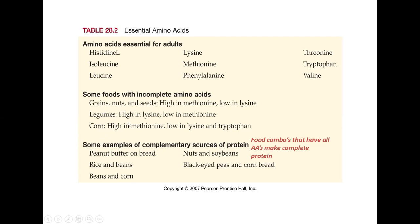Tumbuh-tumbuhan tidak lengkap asam aminonya—masih ada kandungan rendah terhadap asam amino esensial. Itulah sebabnya vegetarian tidak bagus, karena orang vegetarian akan kekurangan asam amino esensial seperti metionin dan lisin. Yang halal seperti daging (asal disembelih dengan benar) dan ikan semuanya halal, itulah yang kita makan—yang halal dan yang baik.